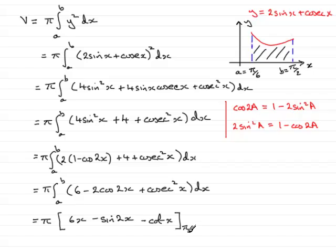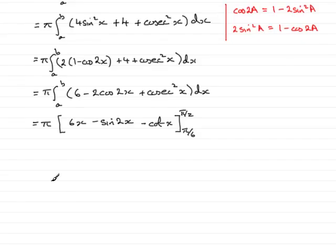And all that's left to do is just to substitute these values in for x. So I'll just move that up a bit more. So we have our pi there. And putting the pi upon 2 in, first of all we have 6 times pi upon 2, minus the sine of twice pi upon 2, so that's sine of pi, and then minus cot of pi upon 2. And I'll put that all in brackets.